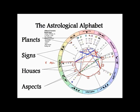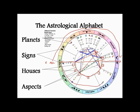The horizontal line in this chart — the Ascendant on the left and the Descendant on the right — is literally the horizon. So everything in the top half of this wheel is visible, is above the horizon. Everything below is literally below the horizon and therefore not visible.